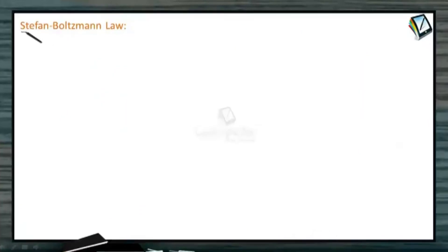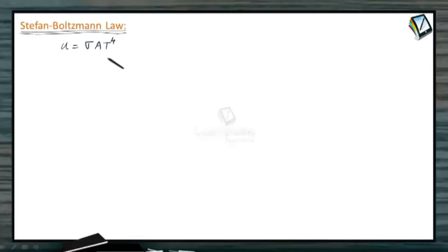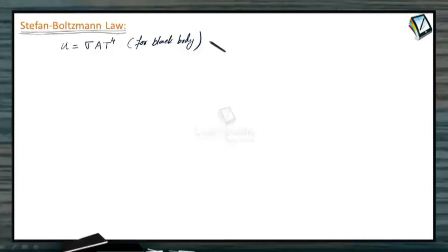Now let us understand the Stefan-Boltzmann law. According to Stefan-Boltzmann law, the amount of thermal radiation emitted per unit time by a black body of surface area A is given by U = σAT⁴, where T is the temperature of the black body. This is written for a black body having surface area A and absolute temperature T. Sigma (σ) is a universal constant known as the Stefan-Boltzmann constant.